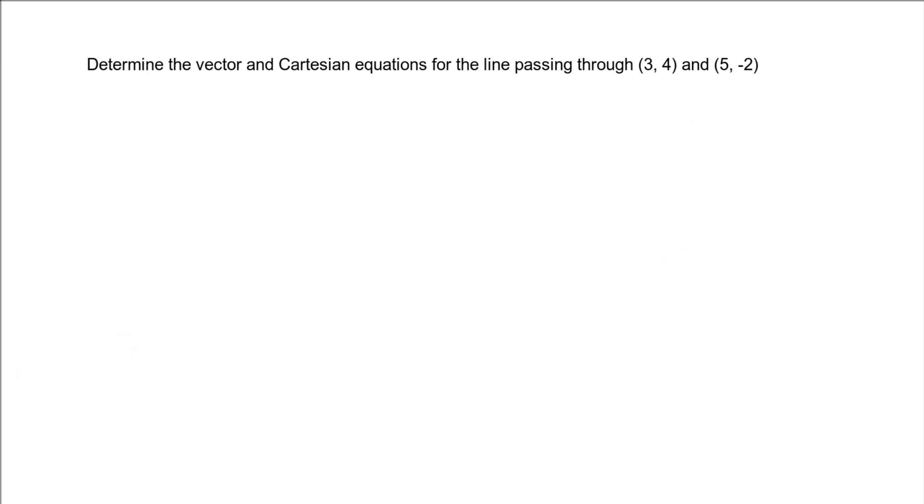Now what this means is that if we look at a quick sketch of what's happening, I've got my x and y axes, and I've got the point (3, 4) and I've got the point (5, -2), and I want to know what is the equation of the line passing through that point as a vector equation and a Cartesian equation.